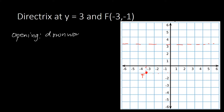Now we look for h, k, and a. We start by finding a, because the distance from the focus to the directrix is 2a. Counting the units between the focus and the directrix we get 1, 2, 3, 4, so 2a equals 4. Dividing by 2, our a is equal to 2. We then locate the vertex at the midpoint — counting 2 units from the focus upward, we get 1, 2.